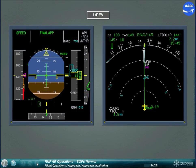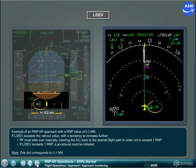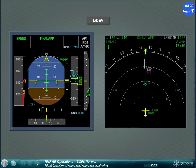Example of an RNP AR approach with an RNP value of 0.3 nautical mile. If LDEV exceeds the call-out value with a tendency to increase further, the PF must take over manually, steering the aircraft back to the desired flight path in order not to exceed 1 RNP. If LDEV exceeds 1 RNP, a go-around must be initiated. If VDEV exceeds minus 75 feet (three-quarters of a dot) after FAP, a go-around must be initiated.